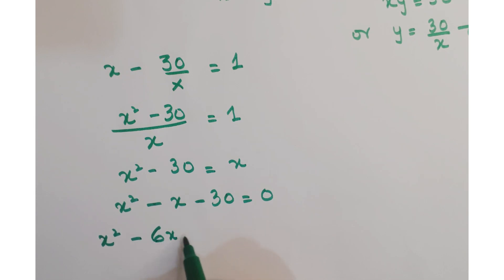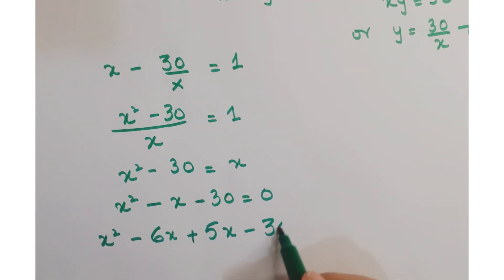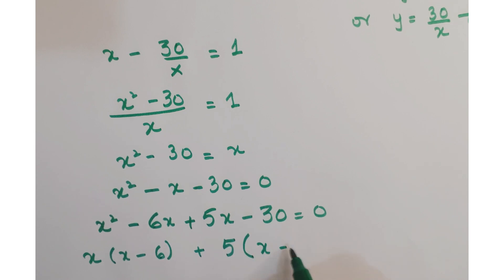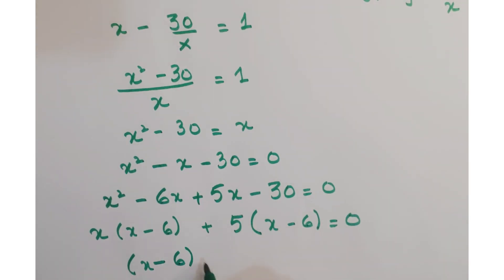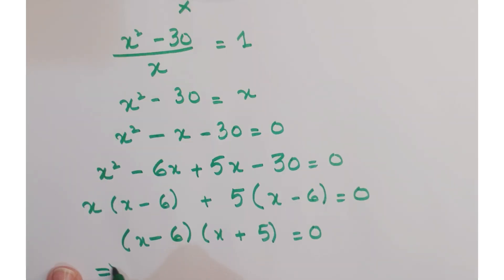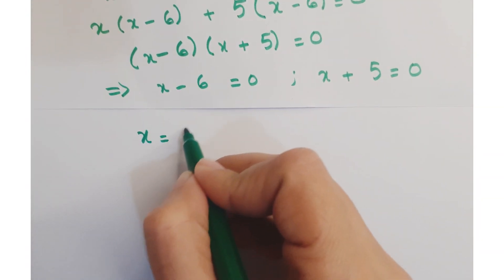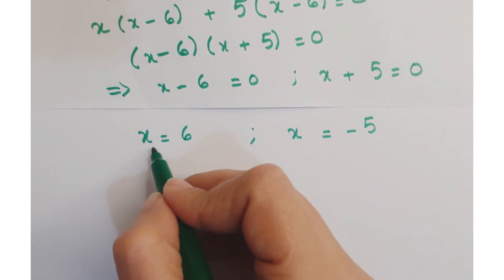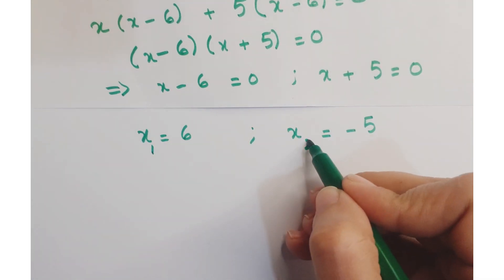Splitting the middle term: x squared minus 6x plus 5x minus 30 equals 0. Taking x common from the first two terms gives x times x minus 6, and 5 common from the last two gives 5 times x minus 6, so we get x minus 6 times x plus 5 equals 0. This implies x equals 6 as the first solution, and x equals minus 5 as the second solution.